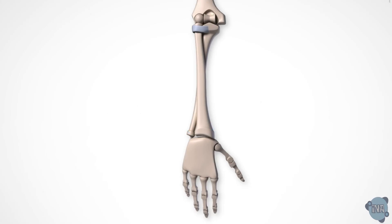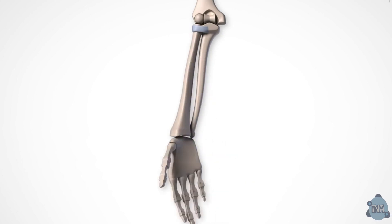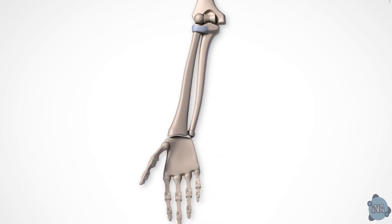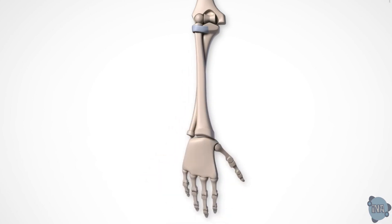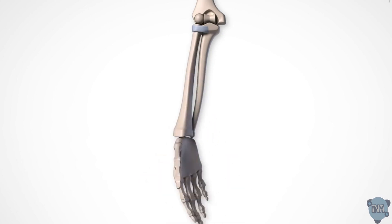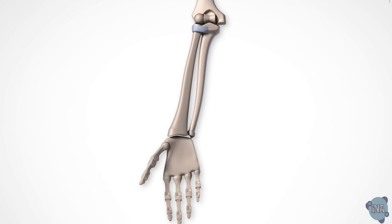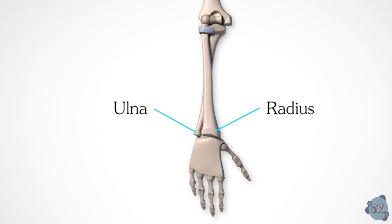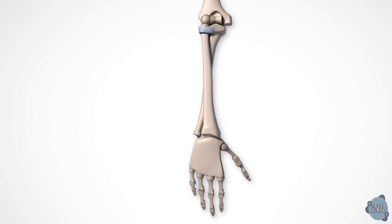Pivot joints, found in the lower arm and neck, allow bones to rotate around each other. For instance, the radius and ulna in the lower arm form a pivot joint. Stretch your arm out and turn your hand palm up, then palm down, to see this in action.